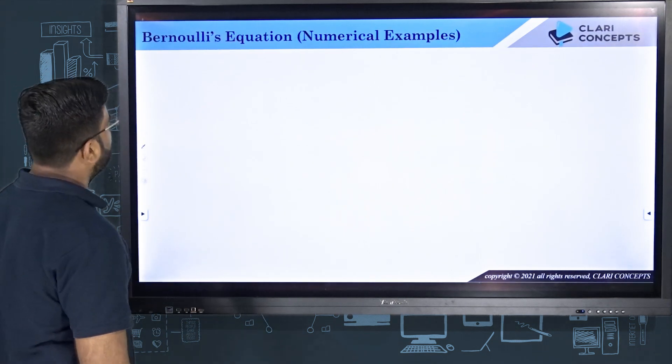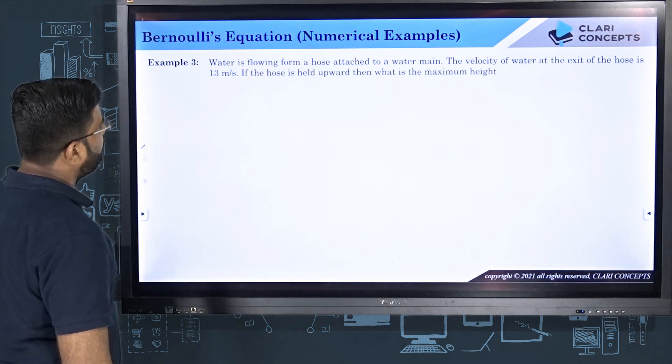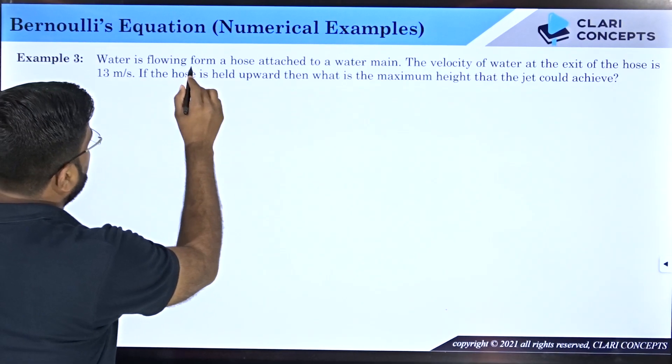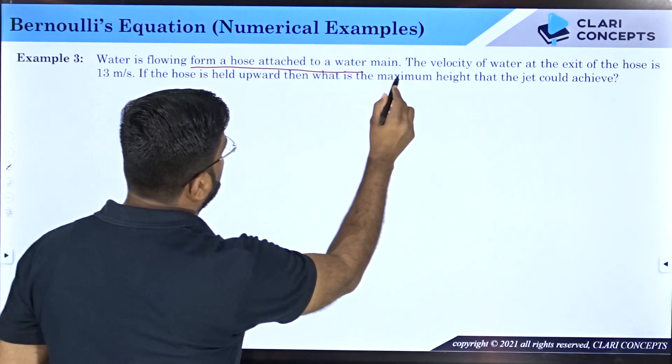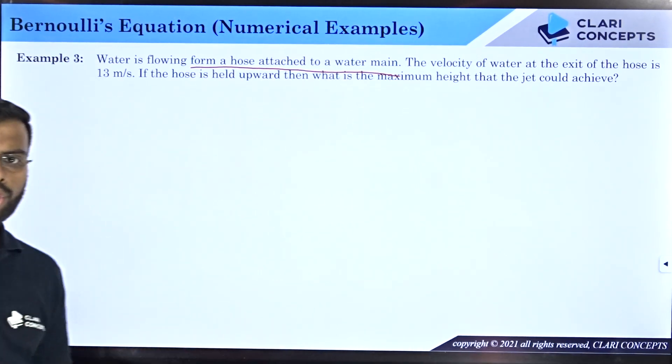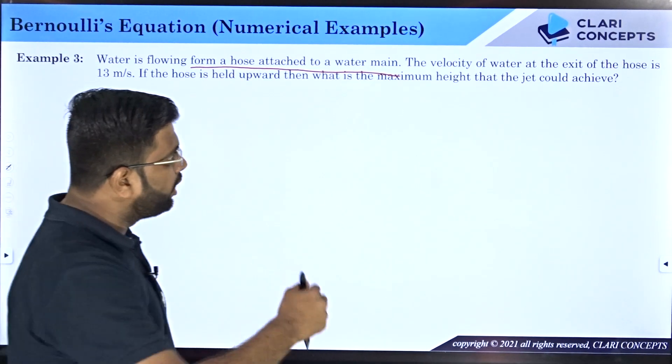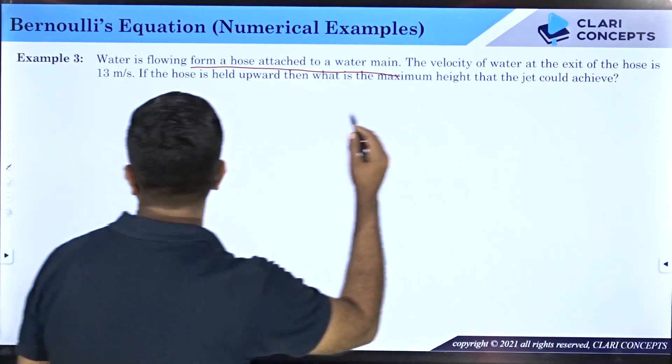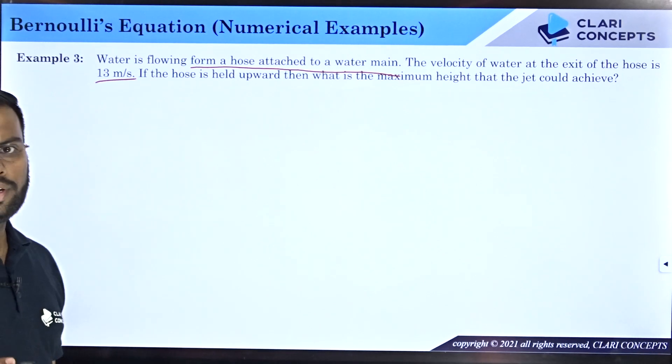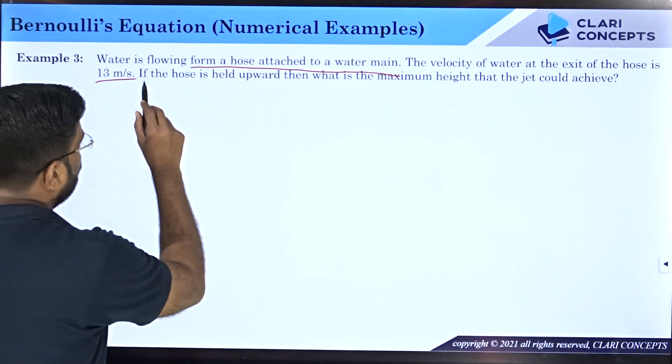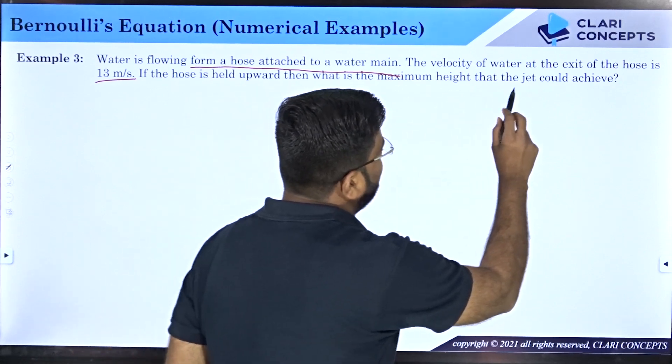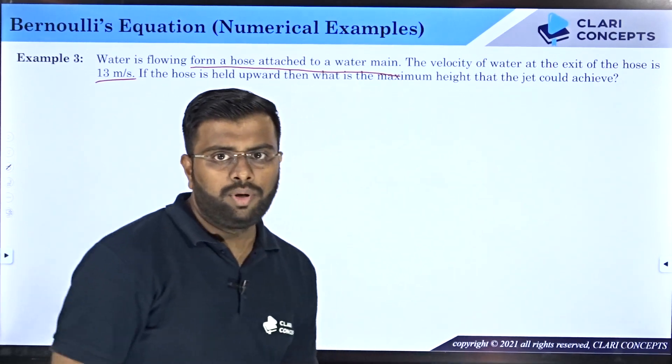Let us continue with the series. Question number three: water is flowing from a hose attached to a water main. The velocity of water at the exit of the hose is 13 meters per second. If the hose is held upward, then what is the maximum height that the jet could achieve?